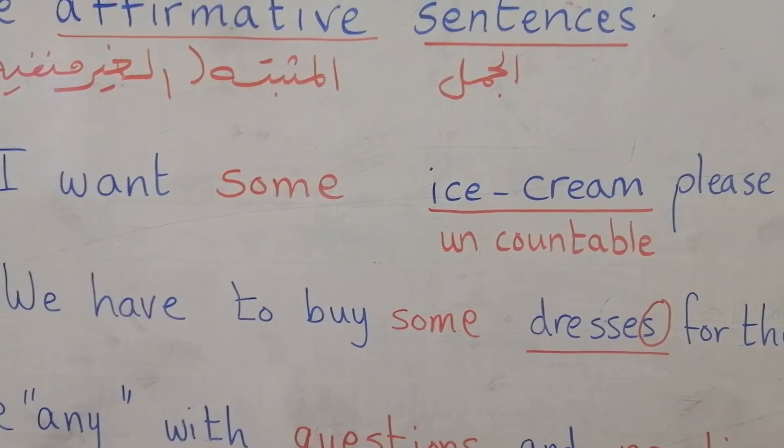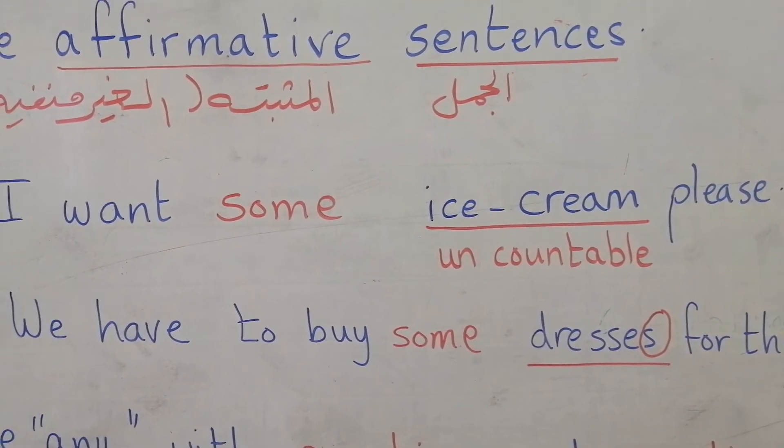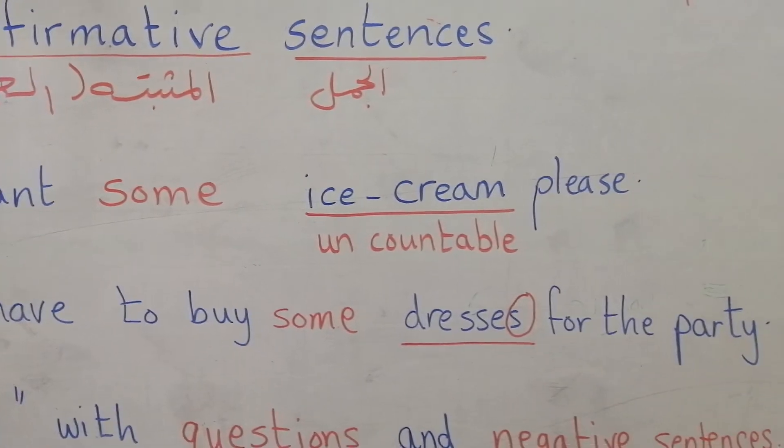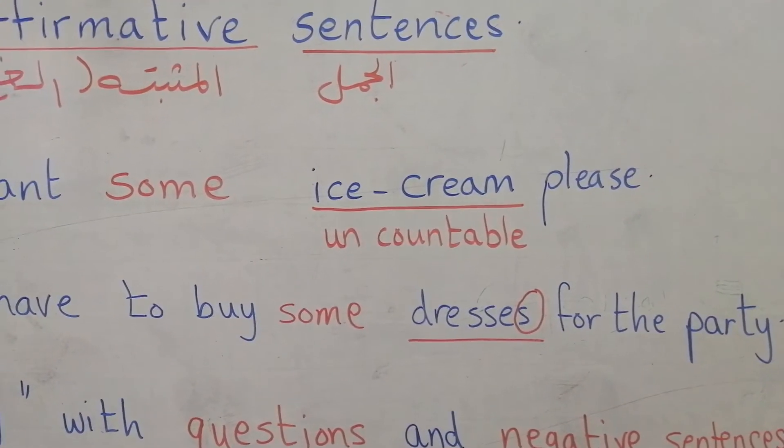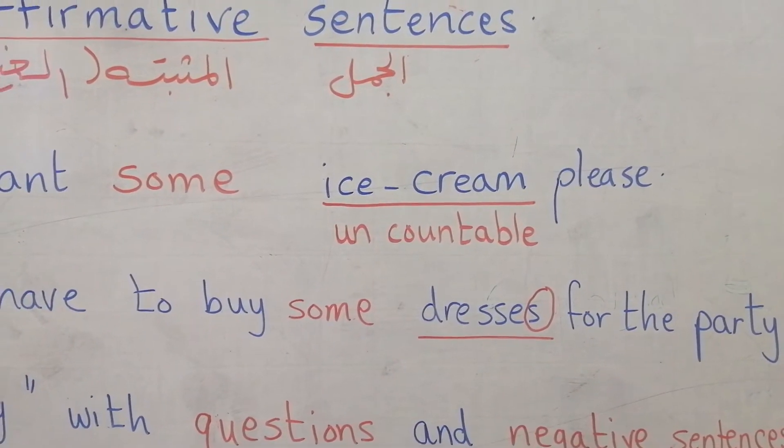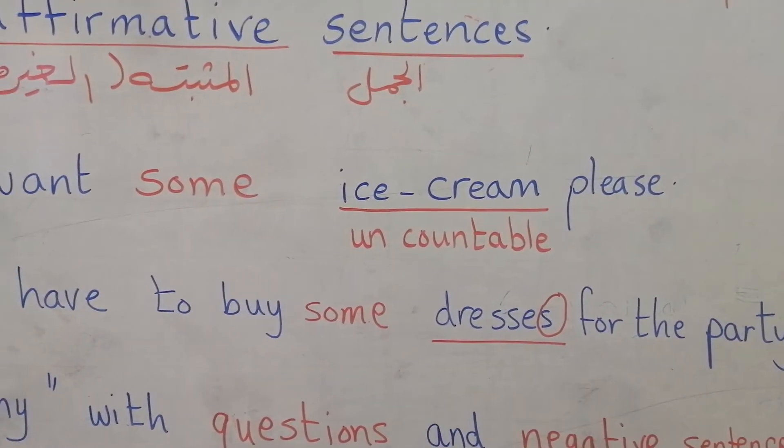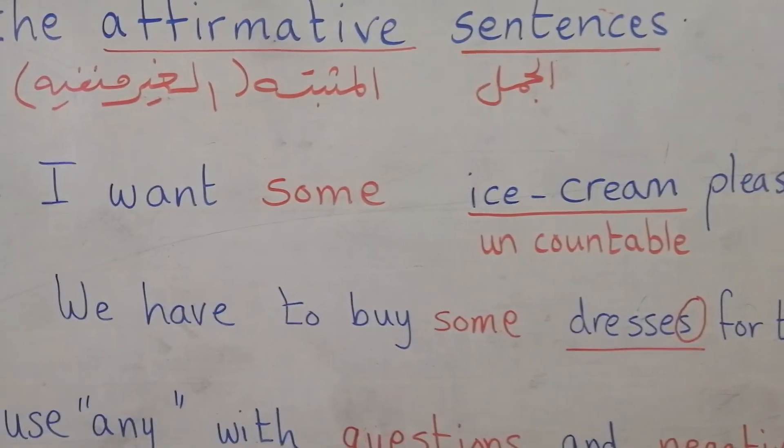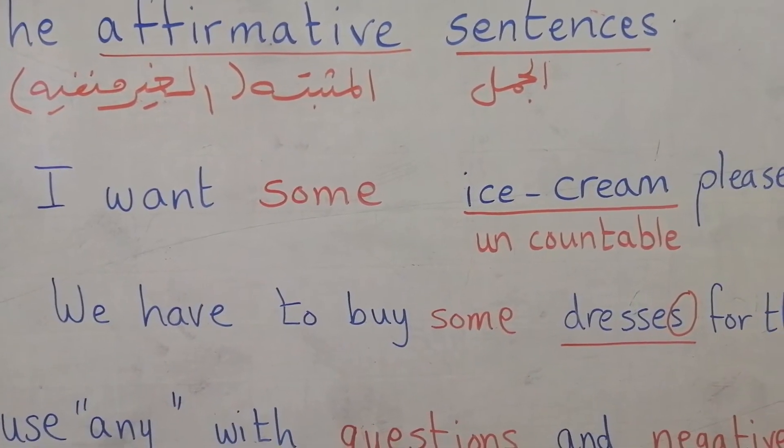Look at sentence two. We have to buy some dresses for the party. Dresses here is plural. It's countable nouns, so we use some with it because also it's an affirmative sentence.